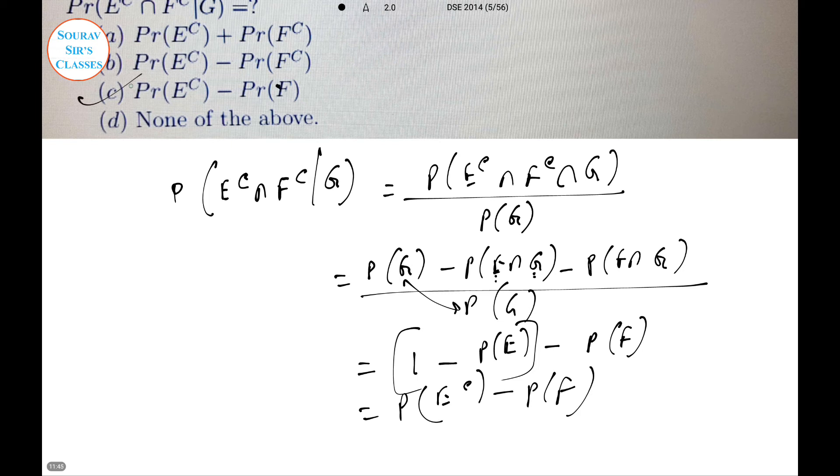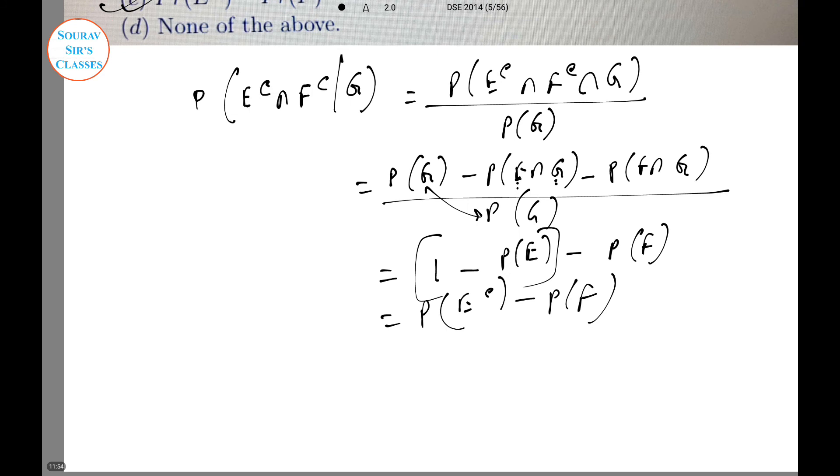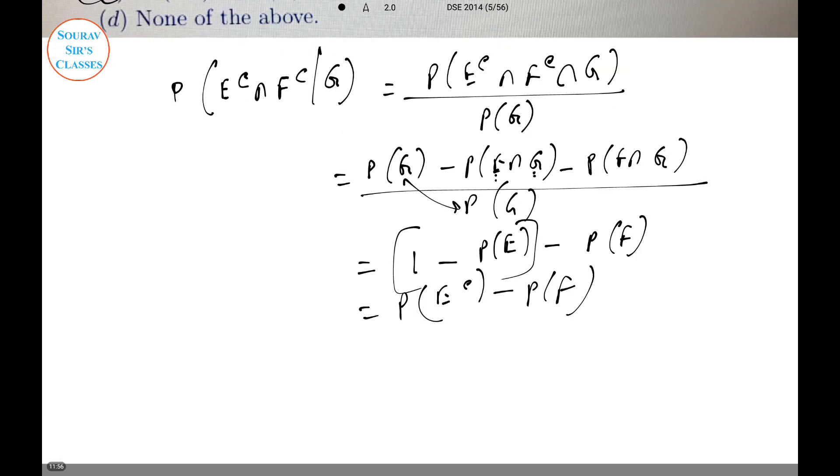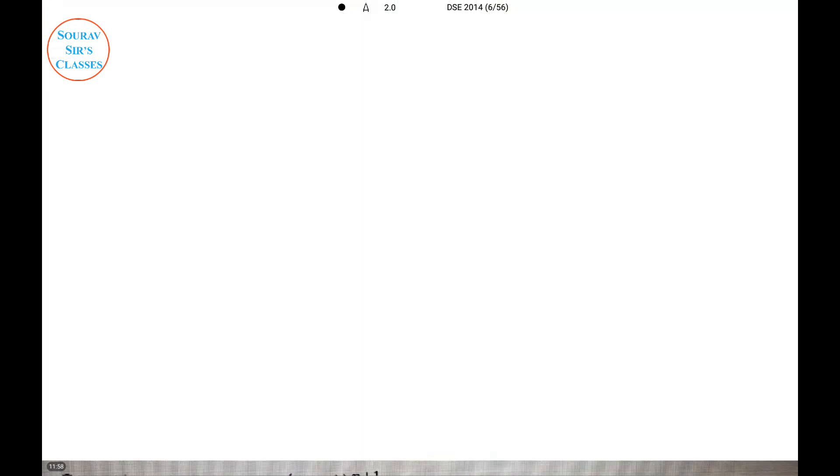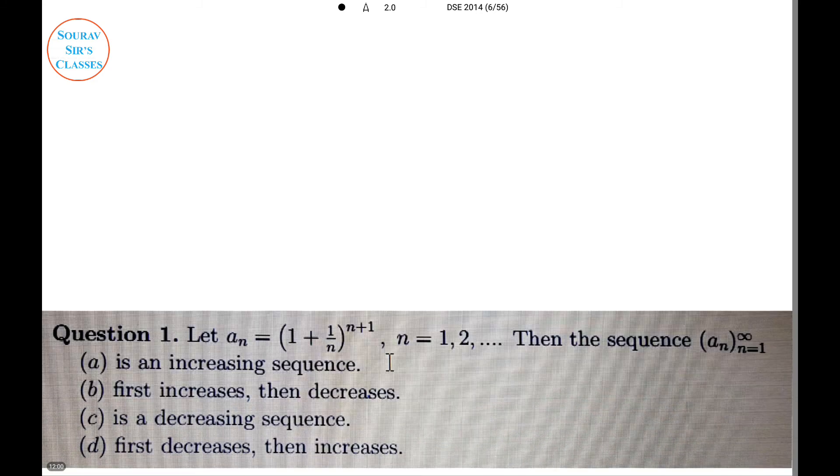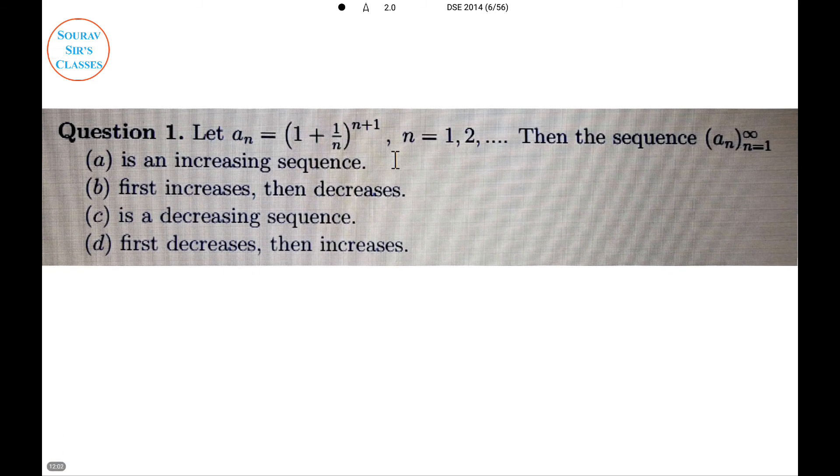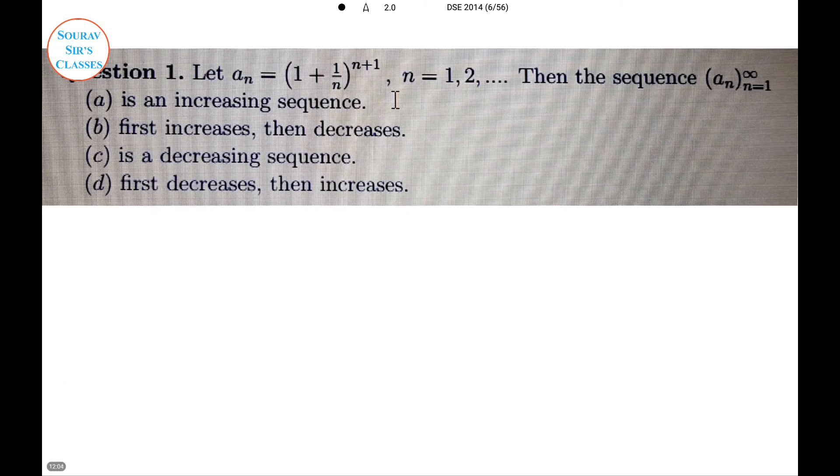We obviously see that option C is our correct answer. Now proceeding to question number 6 of DSE 2014. Here we have a sequence-based question. A_n equals 1 plus 1 by n, whole to the power n plus 1. Then the sequence is increasing, first increasing then decreasing, so what is the basic structure?